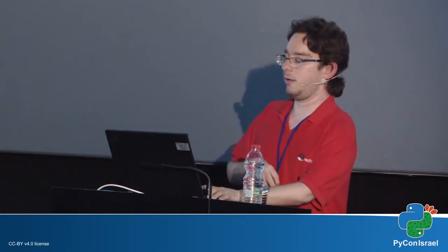We also have thread support. When GDB attaches to a process, it halts all the threads that are currently running — this is how GDB works. So if I have Python code running multiple threads, attaching with GDB will halt all threads, as opposed to PDB where setting trace on threaded Python code will only hold one of the threads. We can switch to different threads, apply a command to all threads, show where all threads are currently at in Python code, list all surrounding code, and do a lot of interesting things.